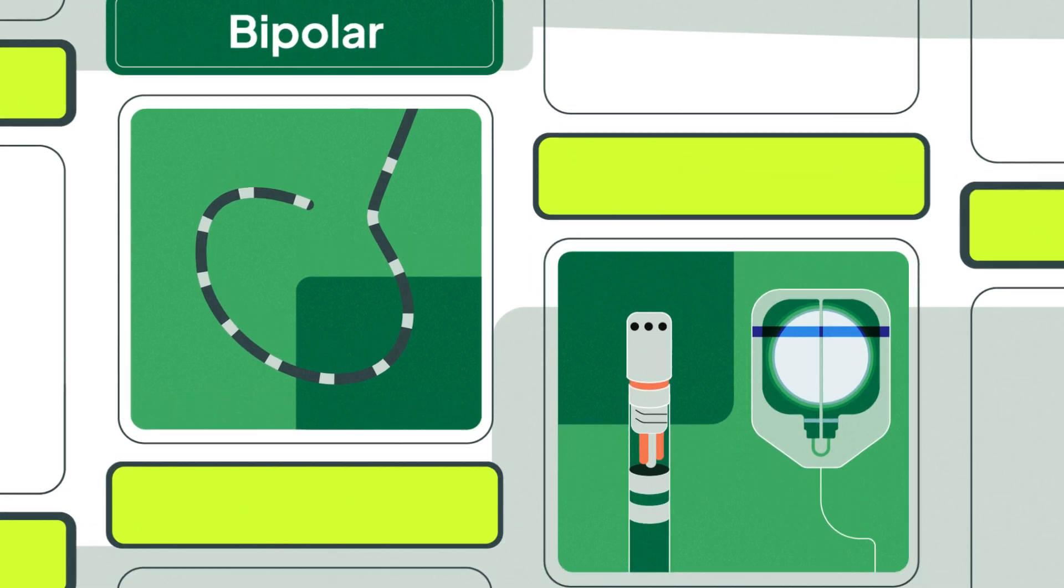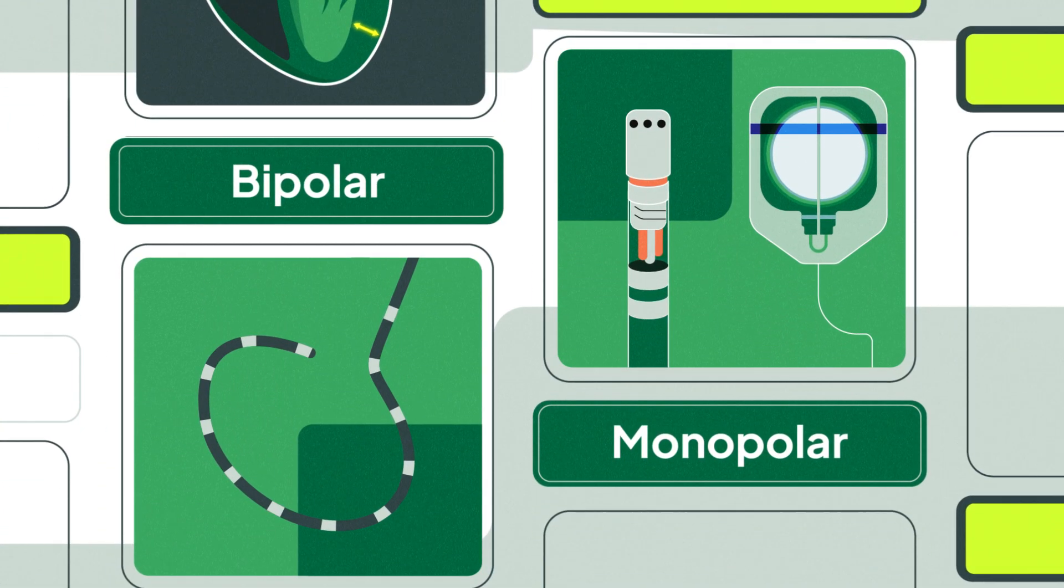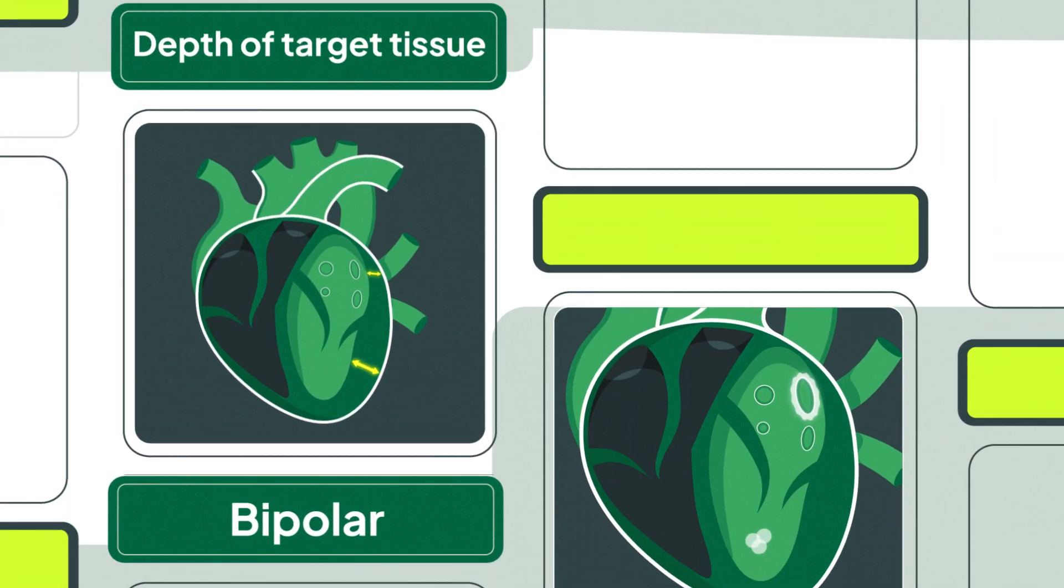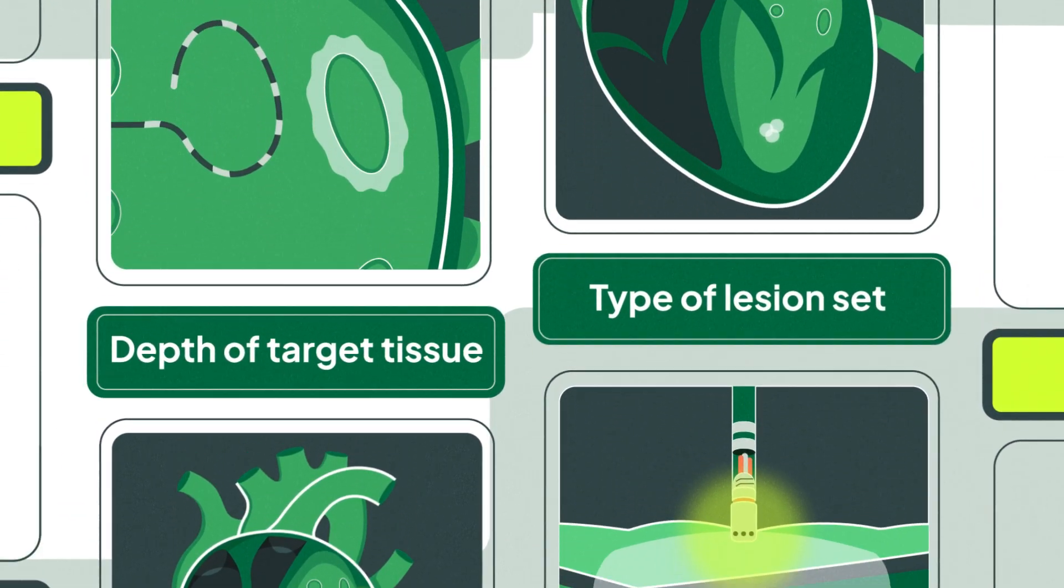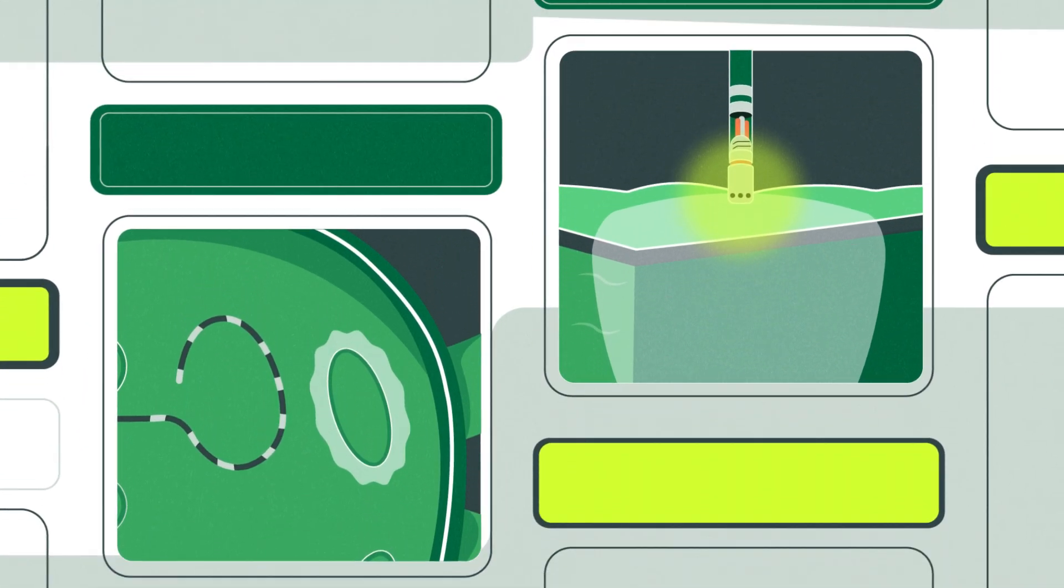To recap, energy can be delivered in a monopolar or bipolar fashion. The depth of target tissue and type of lesion set needed to treat the arrhythmia should dictate the electrode configuration.